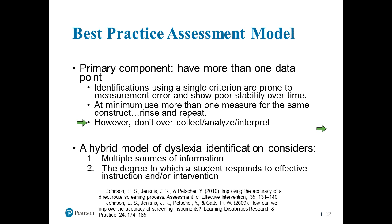The second component is that we're looking at multiple sources of information. Don't just take a child's performance in the classroom and run with that. It's important that we take multiple sources: parent data, history, family history, specific test data, classroom artifacts. We have to be able to take information from multiple sources in this situation.